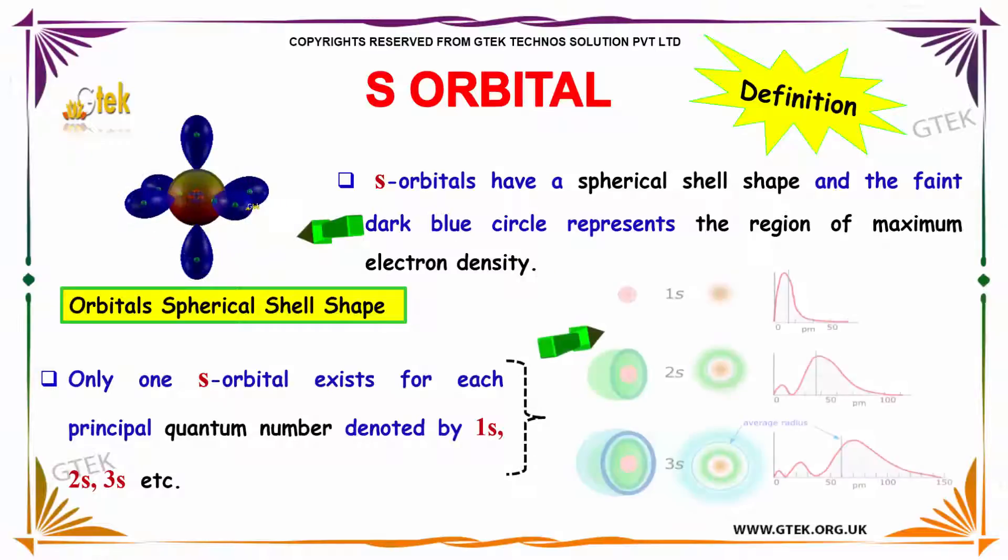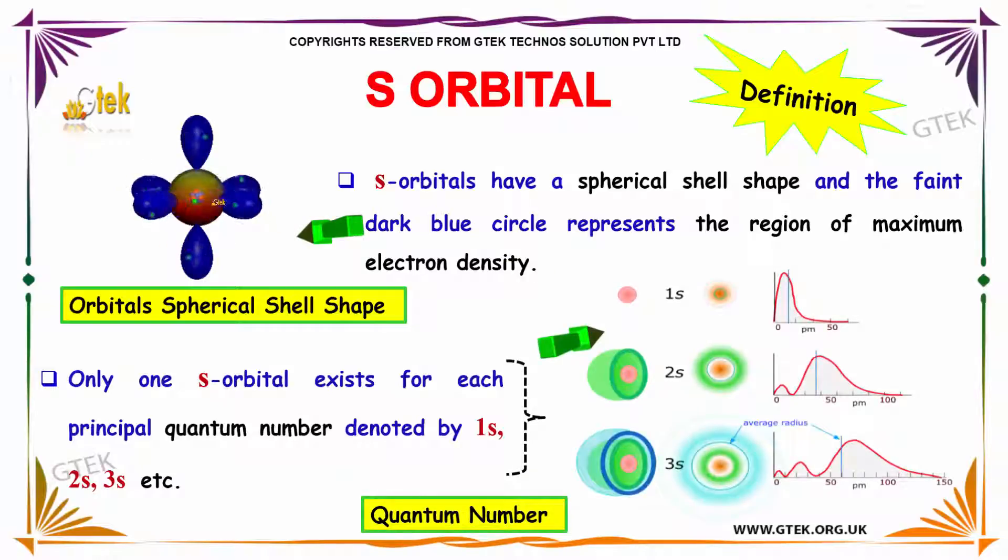By definition, S-orbitals have a spherical shell shape and the faint dark blue circle represents the region of maximum electron intensity and density.